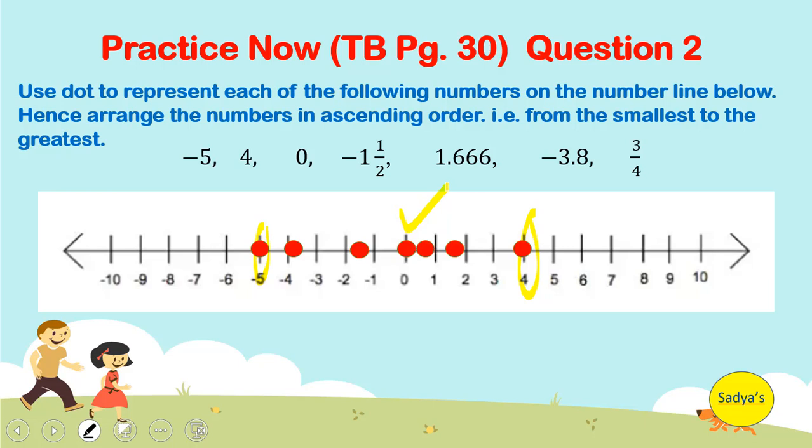So now we can write the numbers in ascending order from smallest to greatest. The smallest number is negative 5. Then we have negative 3.8, negative 1 whole 1 by 2, 0, 3 by 4, 1.666 and 4.